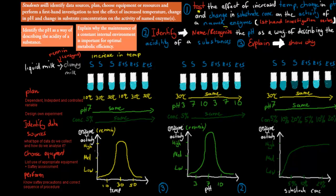The named enzyme I'll be using is rennin. The chemical reaction is as follows: we've got liquid milk as our substrate, and if our enzyme is working, that substrate will be broken down into a product — the clumpy milk. Basically, the protein in the milk will turn from liquid into clumpy. We have a setup of six test tubes: three of them are our controls, having only substrate with no enzyme, and the other three have the enzyme plus the substrate.